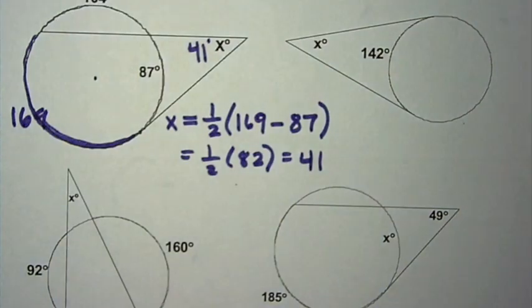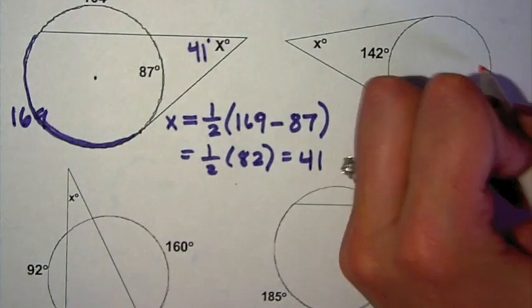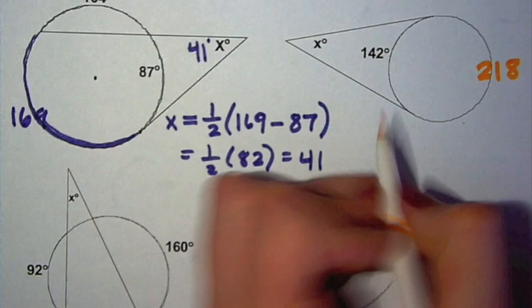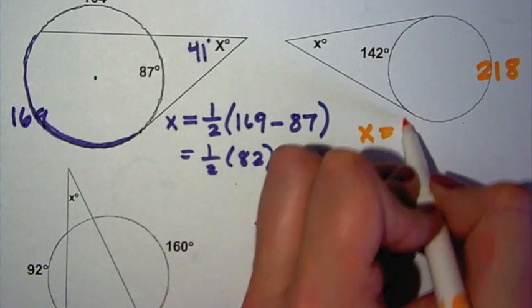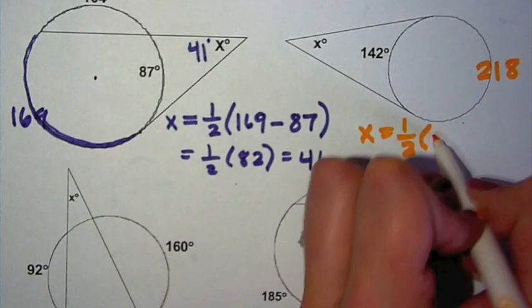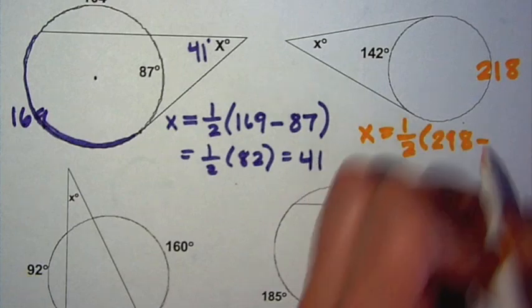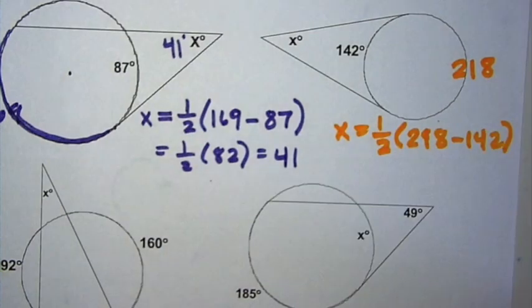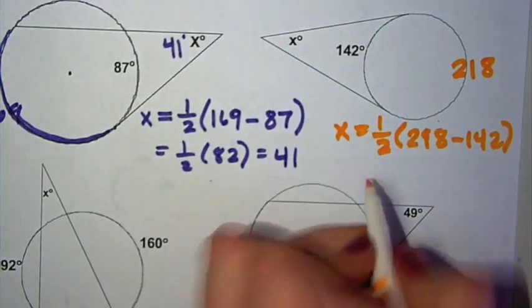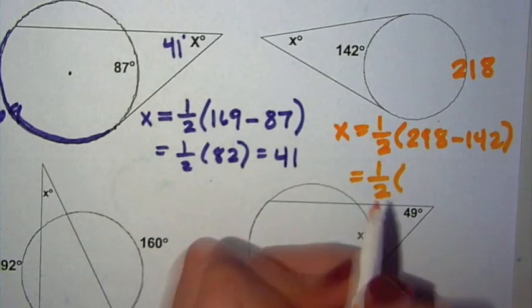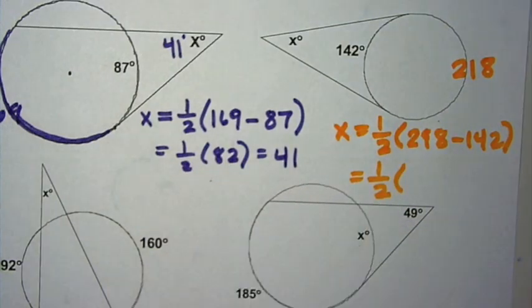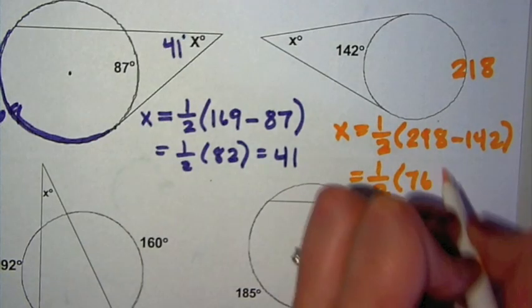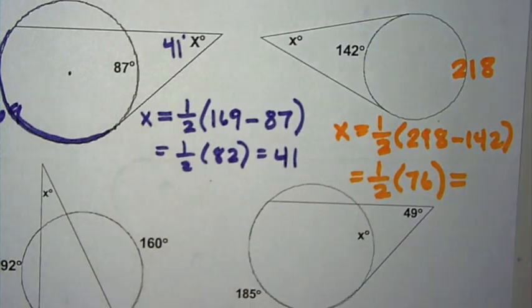The next problem is a similar situation in the beginning. We need to find the missing arc. So 360 minus 142 gives you 218. So x is going to be one-half the difference between those two arcs. So x is going to be one-half 218 minus 142. When you plug that in your calculator, you get one-half times 76. And that is equal to 38.